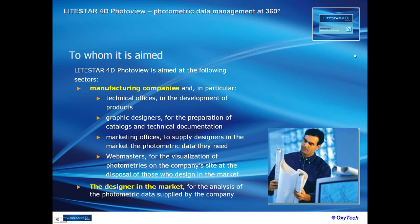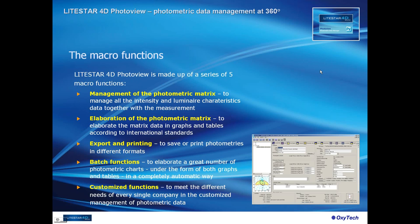Leicester 4D Photoview is made up of a series of five macro functions: management of the photometric metrics, to manage all intensity and luminary characteristics data together with the measurement; elaboration of the photometric metrics, to elaborate the data in graphs and tables according to international standards; export and printing, to save or print photometries in different formats; the batch functions, to elaborate a great number of photometric charts automatically; and the customized functions, to meet the different needs of every single company.